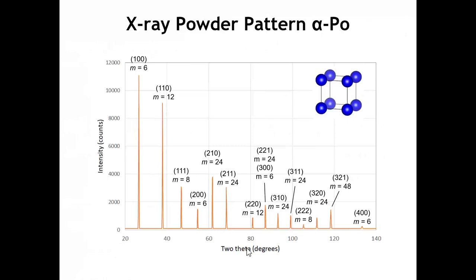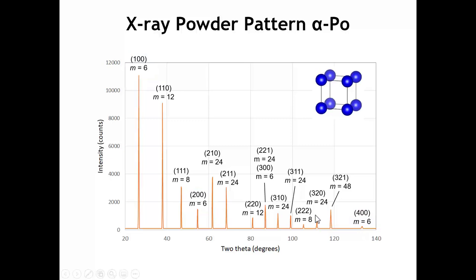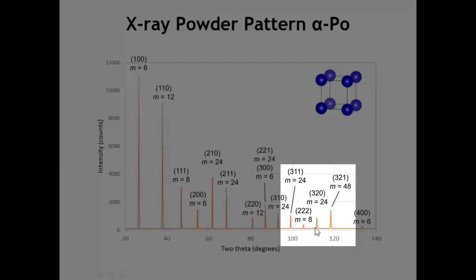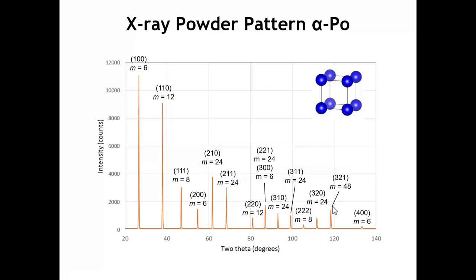Coming back to the powder diffraction pattern for polonium and looking at multiplicities of the different reflections, we start to understand the alternations in peak intensities. The 2-0-0 peak is weaker than its neighbors because its multiplicity is only 6, whereas the next two peaks have a multiplicity of 24. Looking at the 1-0-0, 2-0-0, and 4-0-0, you can see the drop-off in intensity where multiplicities are all the same. But then going from multiplicity 8 to 24 to 48, we see a sequence of increasing intensities going against the general trend — that's the multiplicity effect.